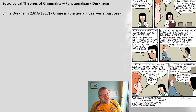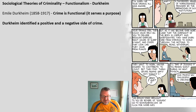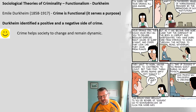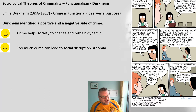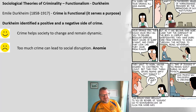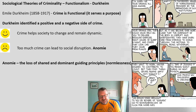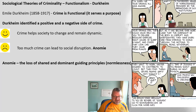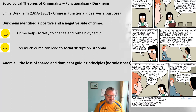So crime is functional and serves a purpose, but it has both positive and negative sides. The positives are that it helps society change and remain dynamic. The negative side is that too much crime can lead to social disruption — and the phrase used by functionalists to describe that is anomie. Anomie is basically the loss of shared and dominant guiding principles, a normlessness where society's norms have been lost and society has fallen apart. Make sure you use the word anomie in any answer on functionalism, particularly Durkheim and Merton — it's a very important phrase.